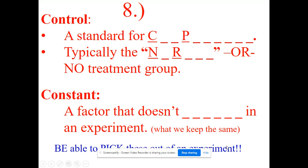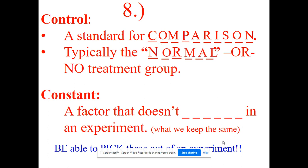I wanted to focus on the control, sometimes called the control group, and constants in an experiment. The control group is a standard for comparison — it represents the normal conditions, the part of the experiment where you don't get the special treatment. A constant is something that doesn't change in an experiment; it's what you keep the same throughout all your groups.